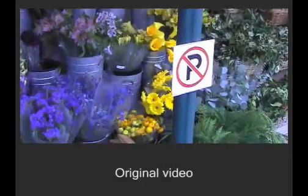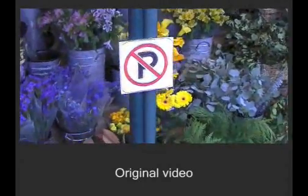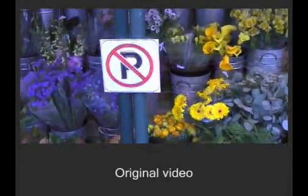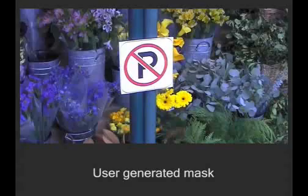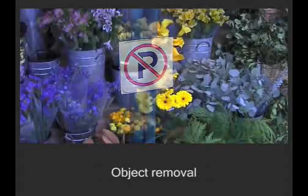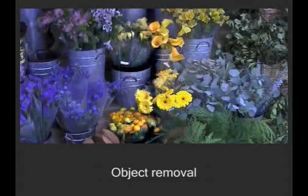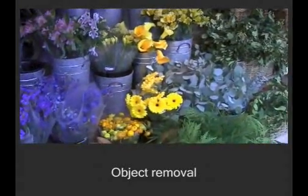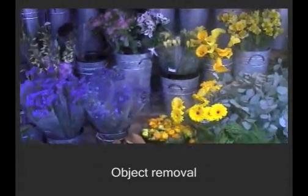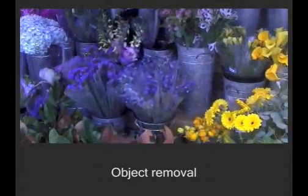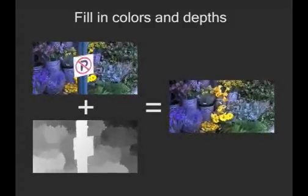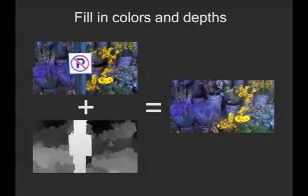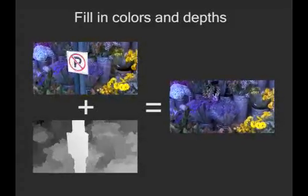Here is a video sequence of a flower shop. Unfortunately, the no parking sign is unattractive and occludes much of the scenic background. The user can select the no parking sign and the pole in a single video frame, and the system removes them from the entire video. To produce this effect, our system fills in the background by projecting the colors from neighboring video frames using the depth estimates.